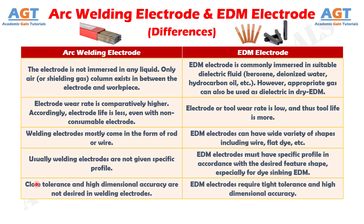Number 9: close tolerance and high dimensional accuracy are not desired in arc welding electrodes, whereas electric discharge machining electrodes require tight tolerance and high dimensional accuracy.